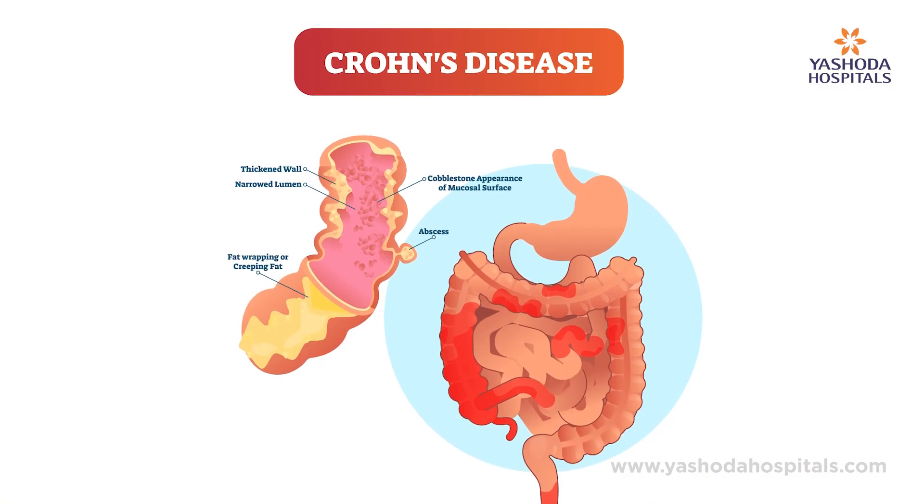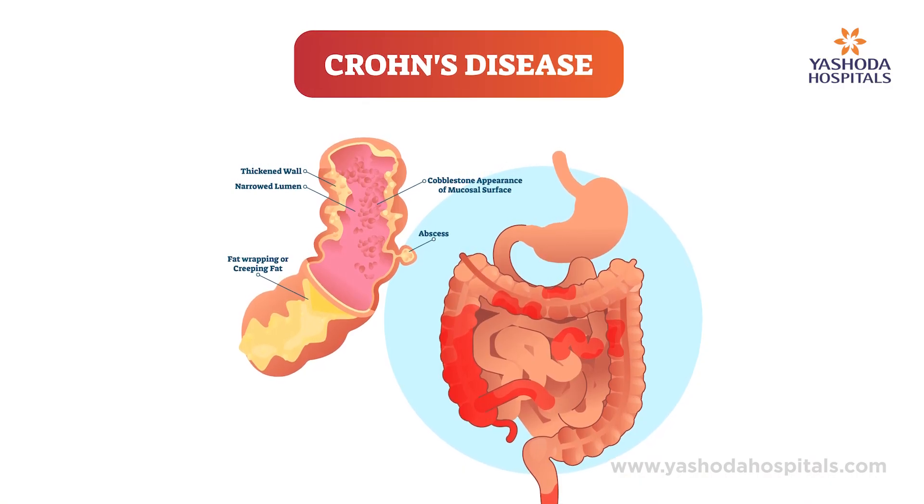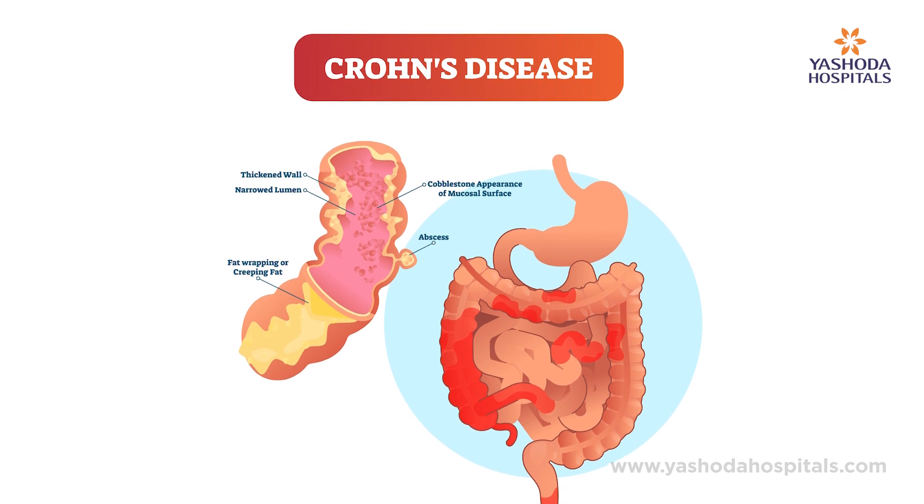What is Crohn's disease? Crohn's disease affects anywhere from your mouth to your anal canal. It can present with ulcers in the mouth, or ulcers in any part of your gastrointestinal system like the esophagus, stomach, small intestine, or large intestine. It can also present with abscesses or pus in the perianal region and multiple perianal fistulas.